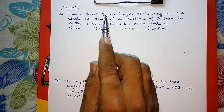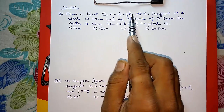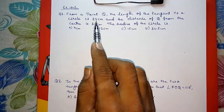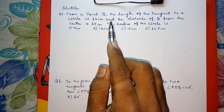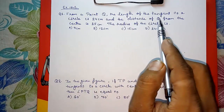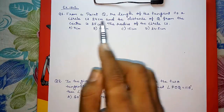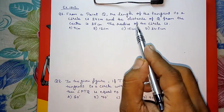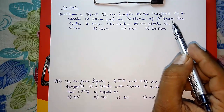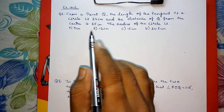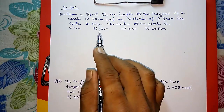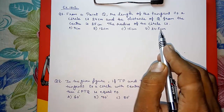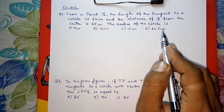From a point Q, the length of the tangent to a circle is 24 centimeters and the distance of Q from the center is 25 centimeters. The radius of the circle is: (a) 7 cm, (b) 12, (c) 15, or (d) 24.5 centimeters.